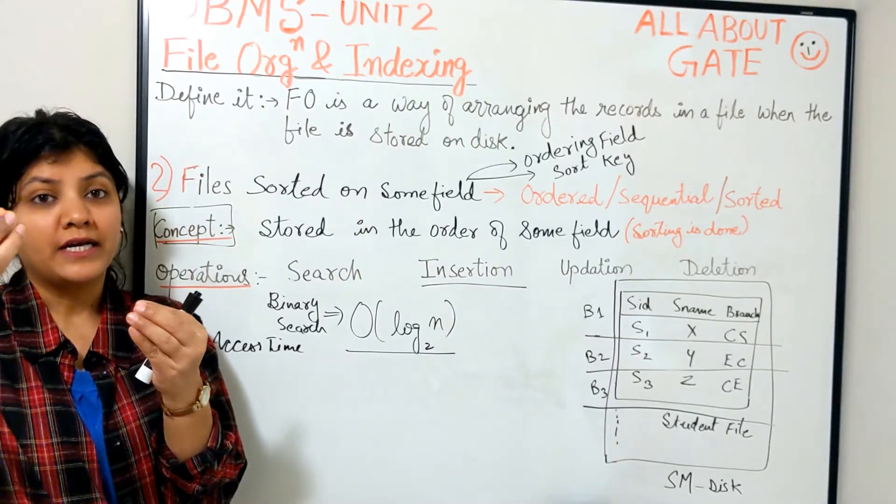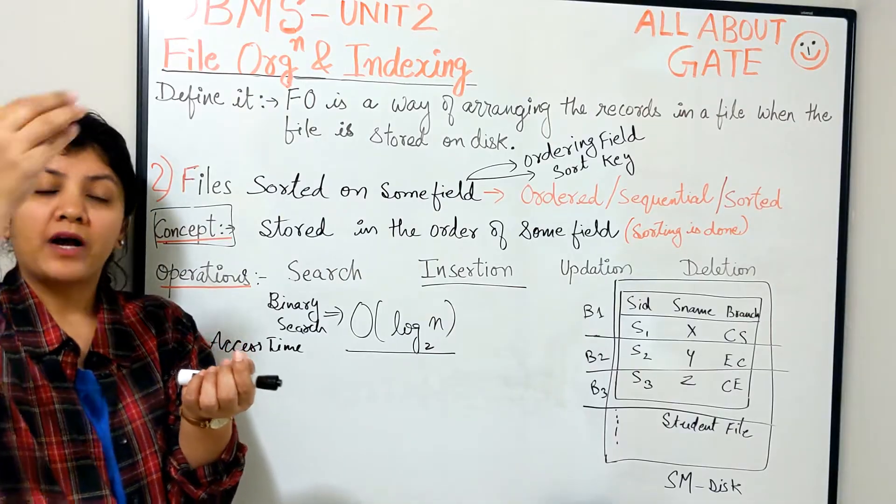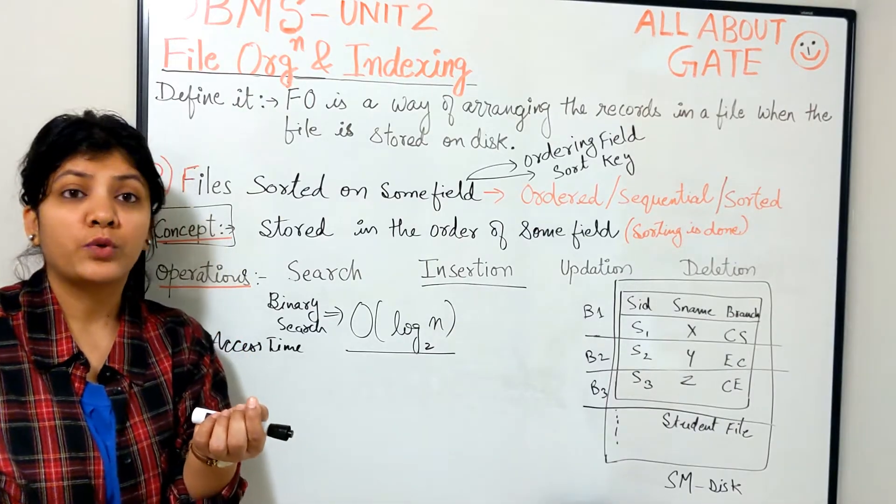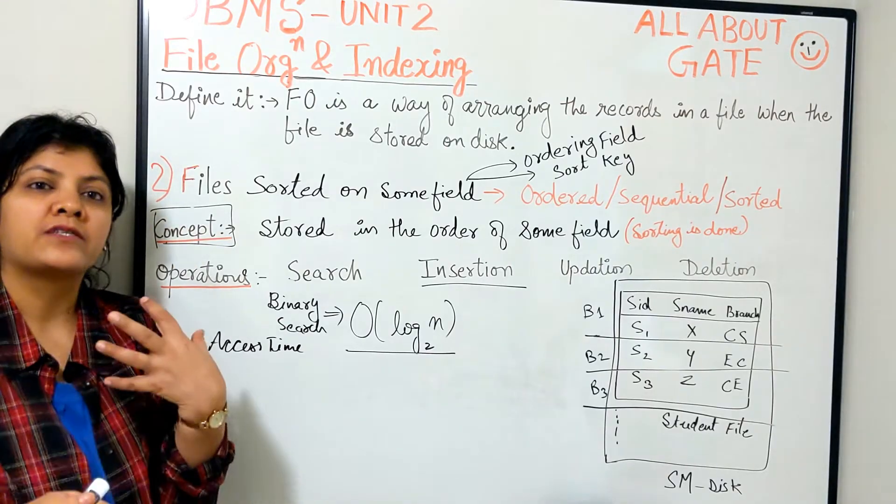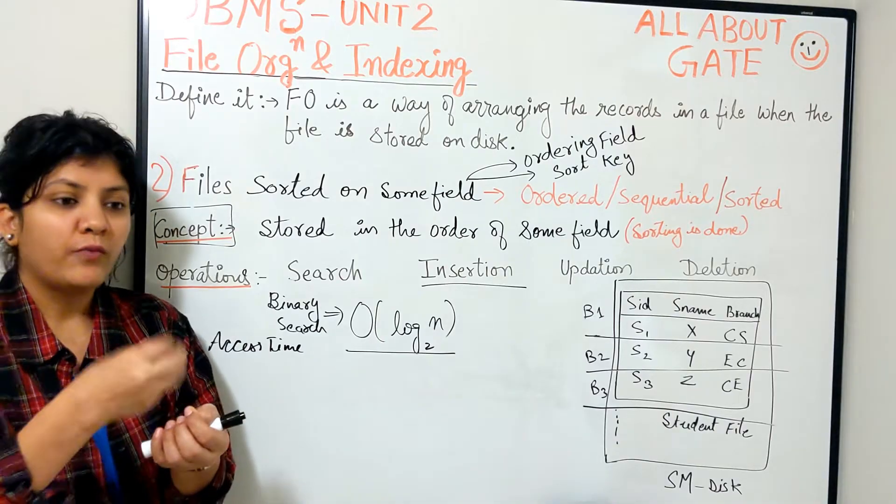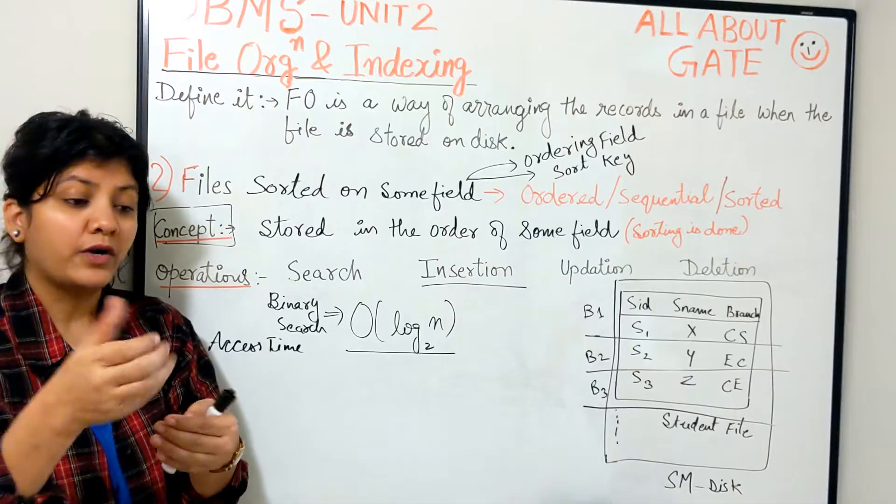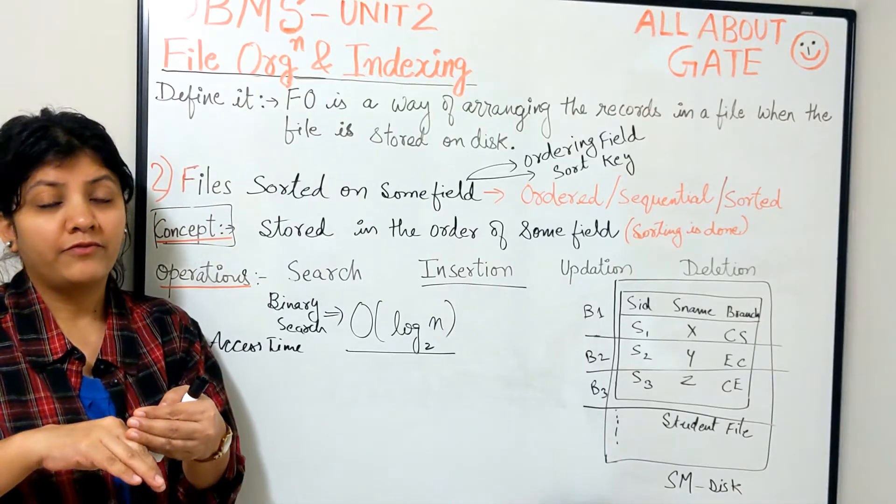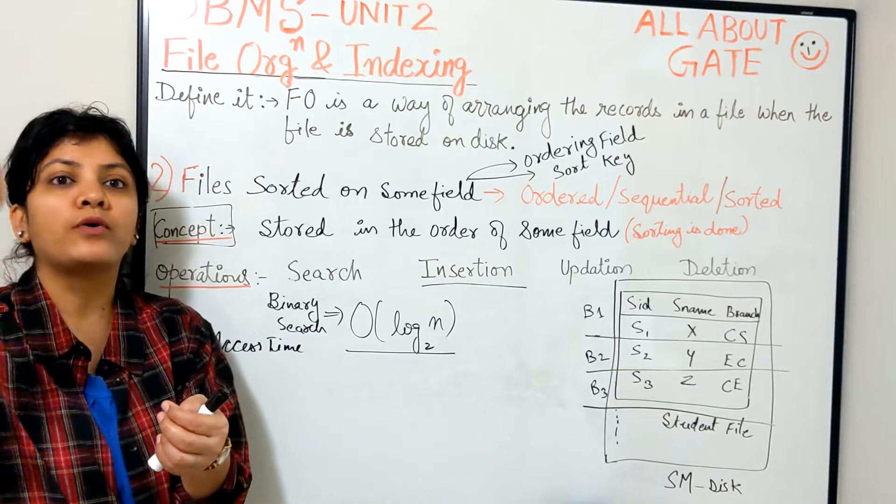That will be known as hash field now. So whatever hash field we are selecting, on that we will apply the hash function, some hash function, and that will give us the block number. So that record will go into that particular block number. Accordingly, all the records will be stored in the hash-based organization. How that makes access faster?